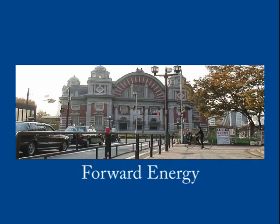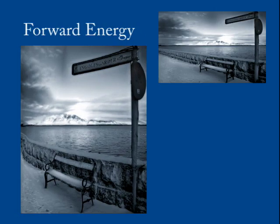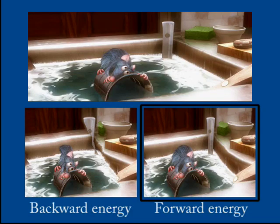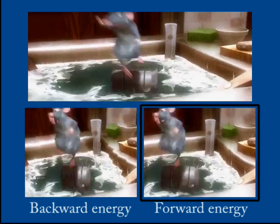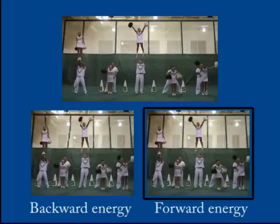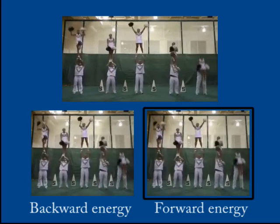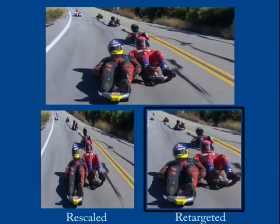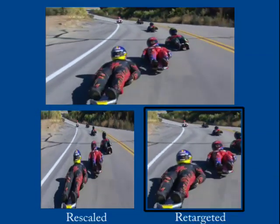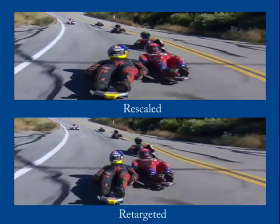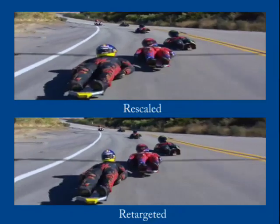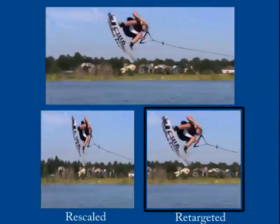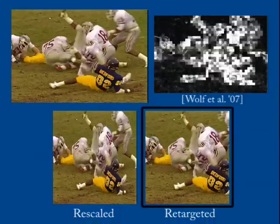We found that in most cases, using forward energy gives better results than using backward energy. It also provides better quality results for video retargeting. We show several examples of video retargeting using seam carving. Our first examples use the forward energy to change the aspect ratio by reducing or enlarging the video.